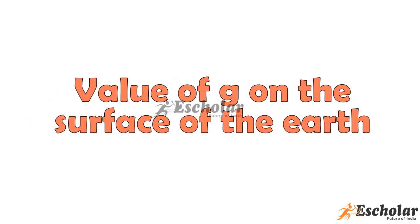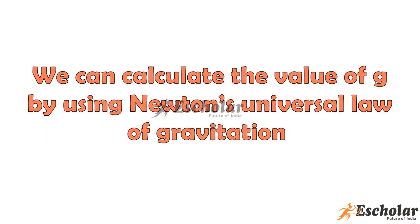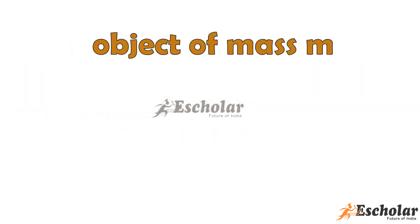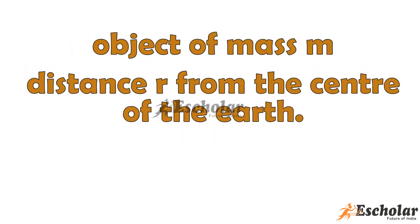Value of g on the surface of the earth. We can calculate the value of g by using Newton's universal law of gravitation for an object of mass m situated at a distance r from the center of the earth. The law of gravitation gives F equals G times M times m upon r square, where M is the mass of the earth.